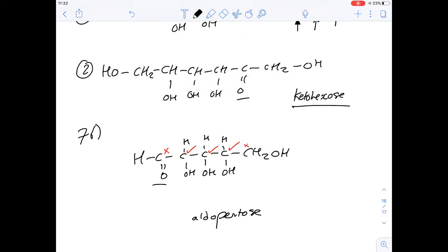And so that means it's got three stereocenters, so the answer for this one is going to be an aldopentose with three stereocenters, so 76 is going to be A.